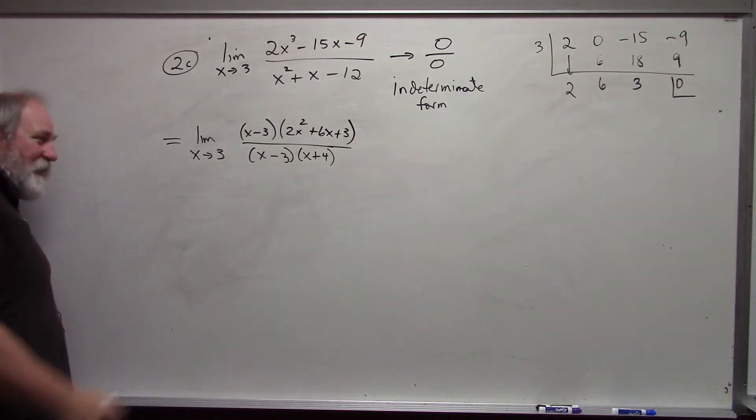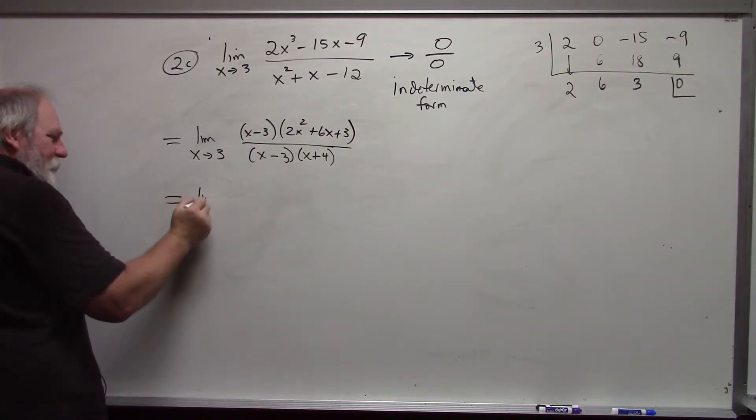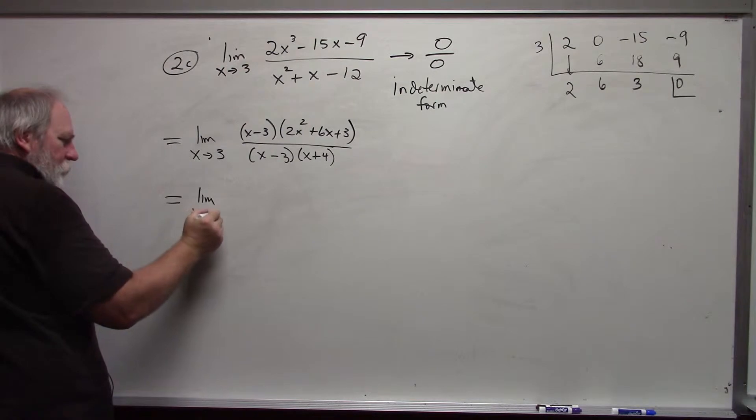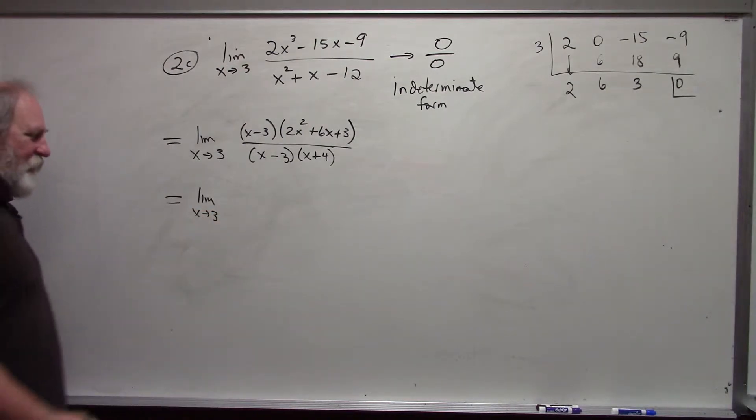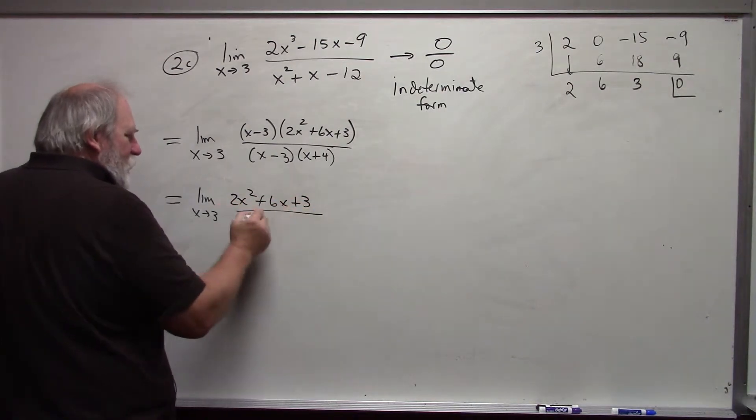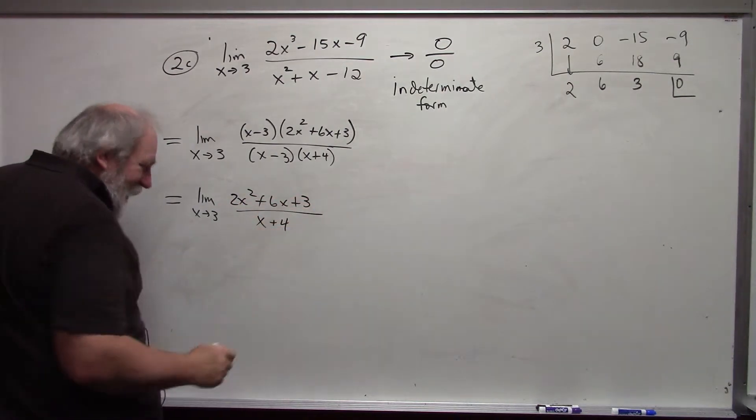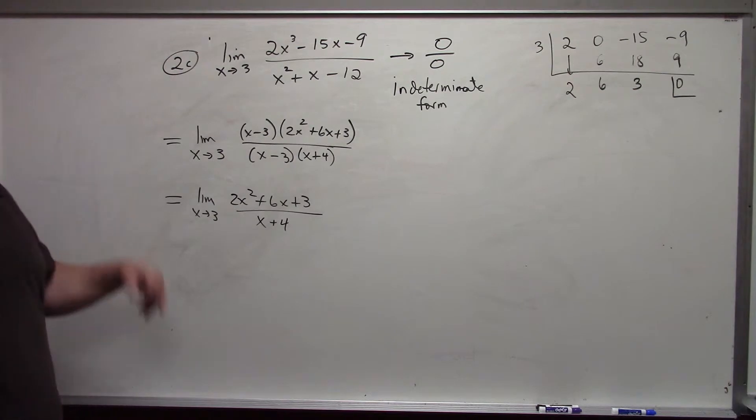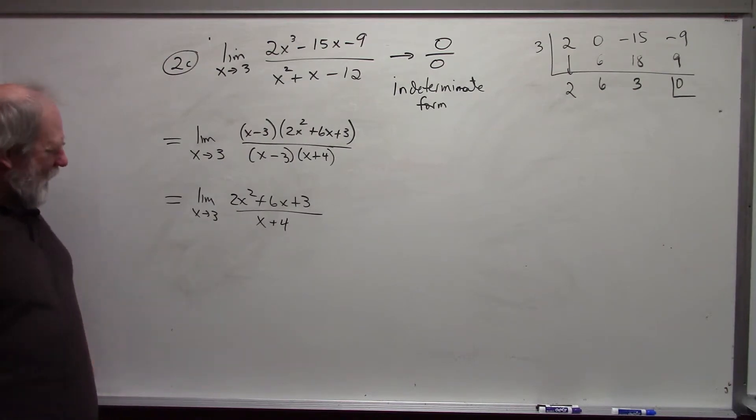The x minus 3s can then reduce. I am left with 2x squared plus 6x plus 3 over x plus 4. Write that step. We need to reduce it before we take the limit. These two expressions are equivalent as long as x does not equal 3.